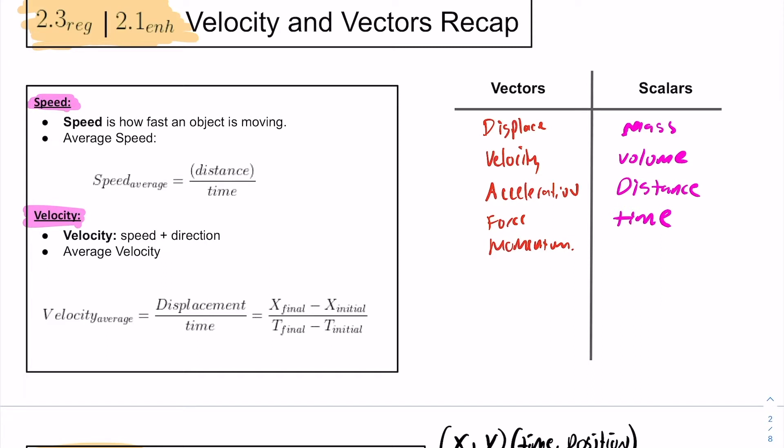And vectors. Velocity is speed with direction. In order to calculate average velocity, we would use displacement over time, which is change in position. Another way of writing this would be x final minus x initial over t final minus t initial. It's delta x over delta t.